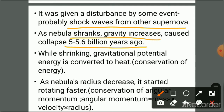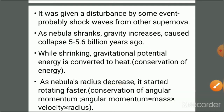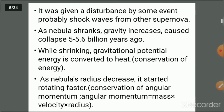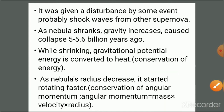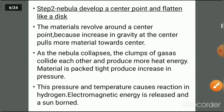This collapse occurred five to five point six billion years ago. While shrinking, gravitational potential energy is converted to heat in order to maintain conservation of energy. As the nebula's radius decreases, it starts to rotate faster in order to maintain conservation of angular momentum. Angular momentum is a product of mass, velocity, and radius. If the radius decreases, the velocity increases to maintain the same value, so the rotation becomes faster.